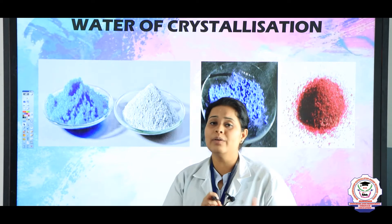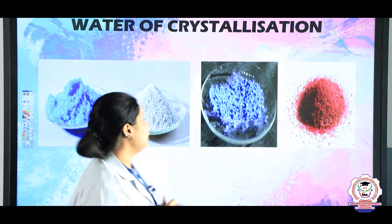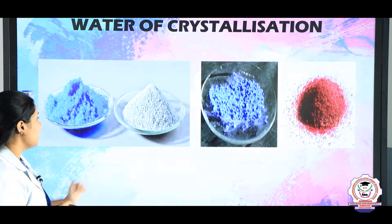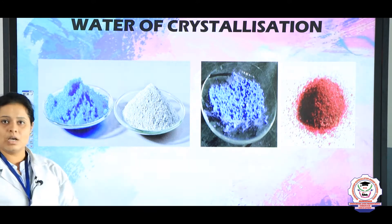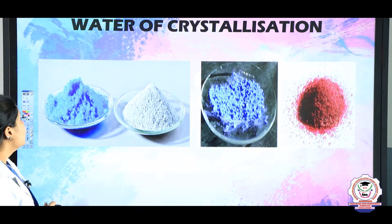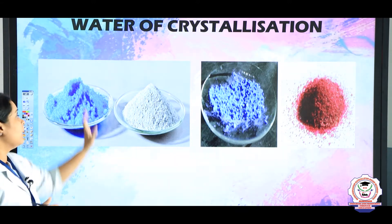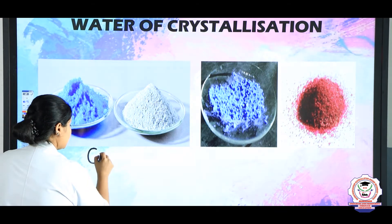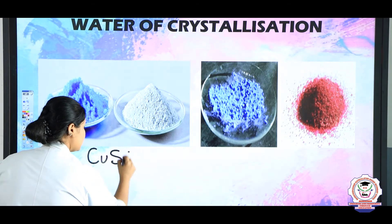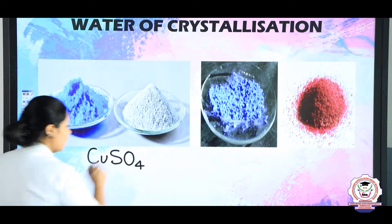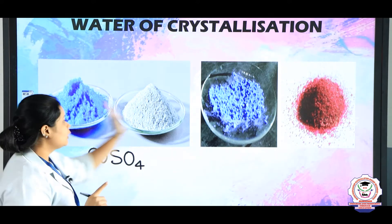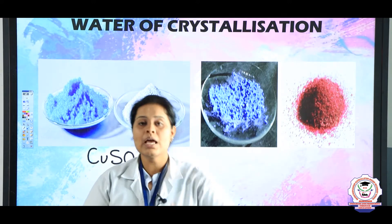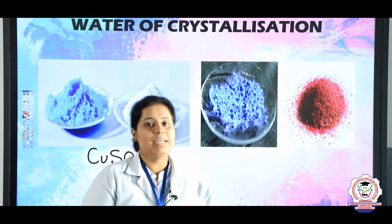Before going into this, we should know what this means. Here I have an example. Children, you can see that here there is a blue salt and on this side there is a white colour salt. Both of these are copper sulphate — CuSO4. The main difference between these two salts is that one is having water molecules and another is not having any water molecule.